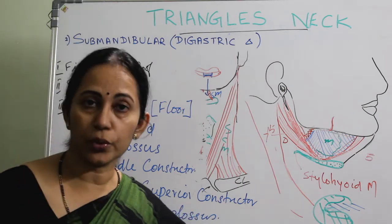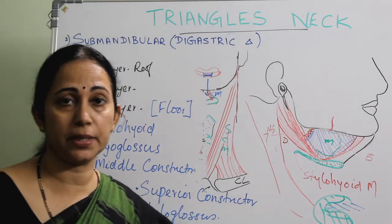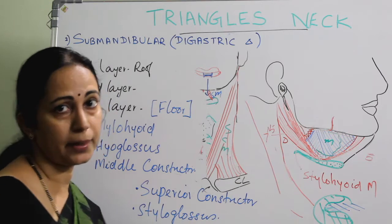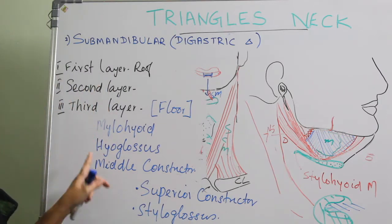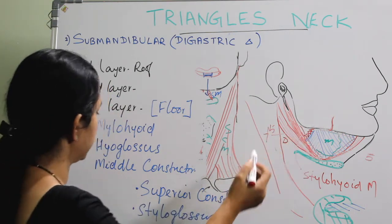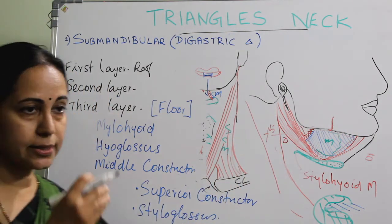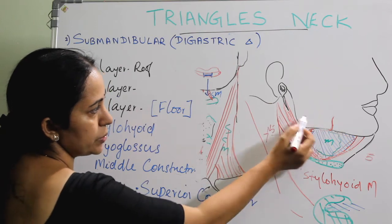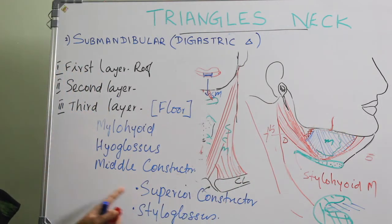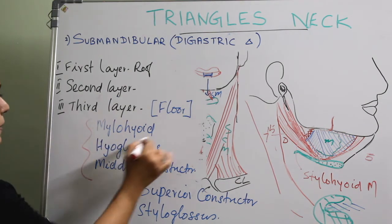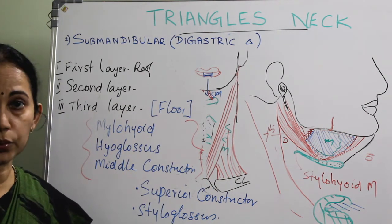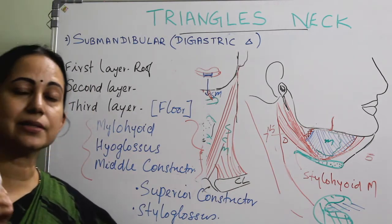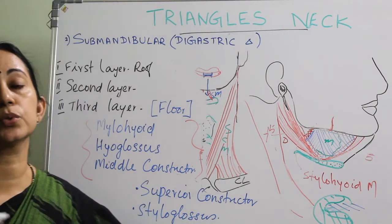The third layer is the floor of the submandibular triangle, formed mainly by the mylohyoid muscle, with a small contribution from the hyoglossus muscle. Also contributing are the middle constrictor, a very small part of the superior constrictor, and the styloglossus muscle. So the main muscles forming the floor are mylohyoid, hyoglossus, middle constrictor with a little superior constrictor, and styloglossus.